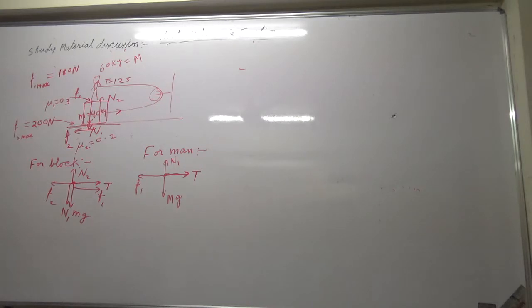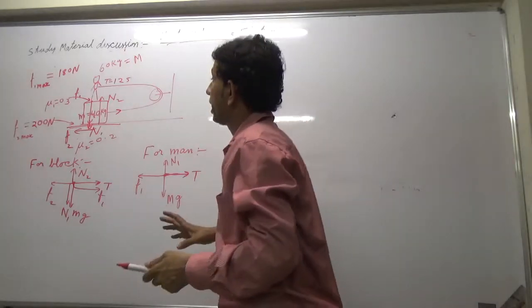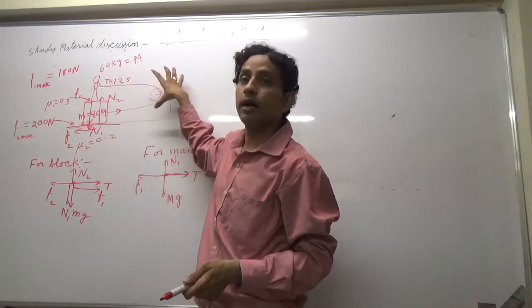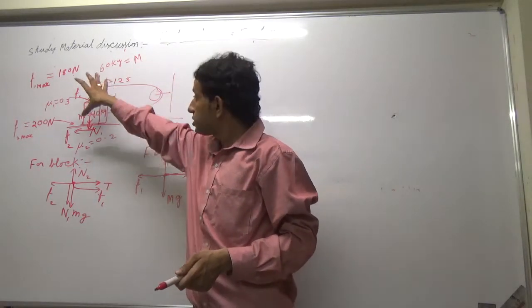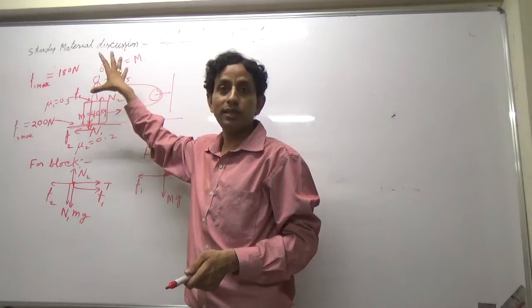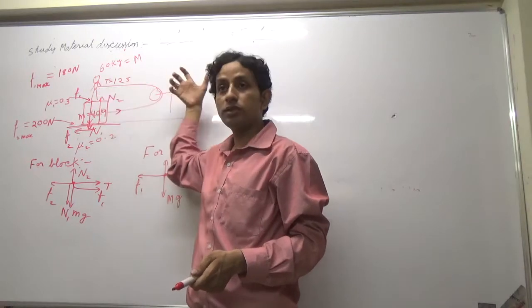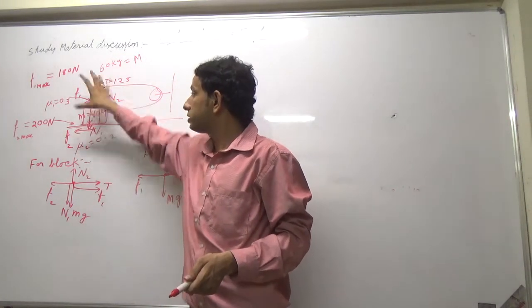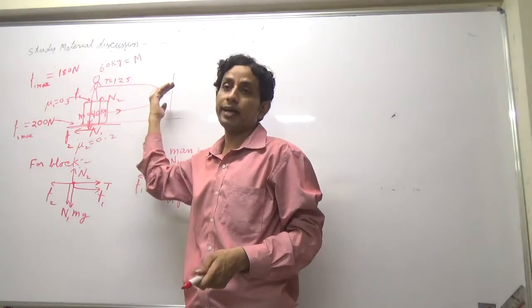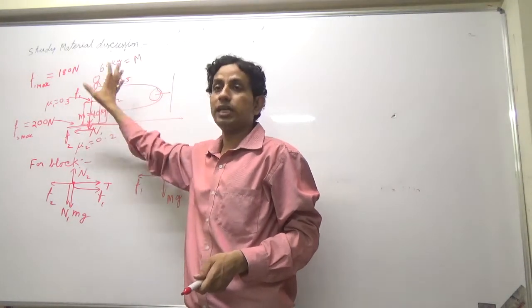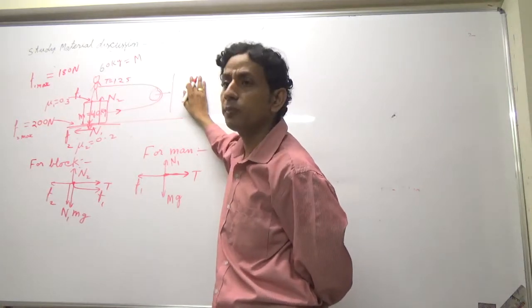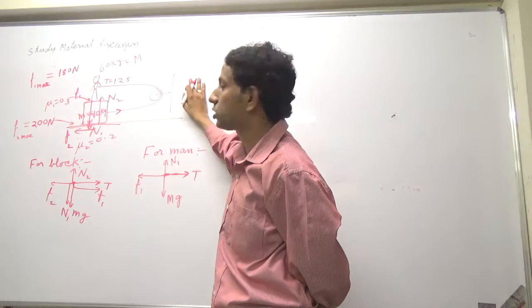is 200 Newton. The system has 125 plus 125, net pulling force is 250, and friction on the whole system is only from ground, 200. So net 50 Newton force is there, so whole system will accelerate. Now we assume they move together.